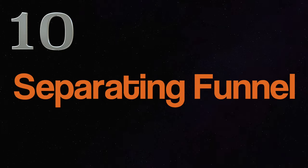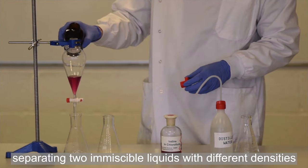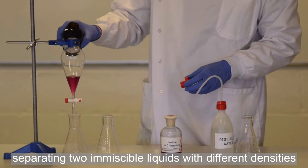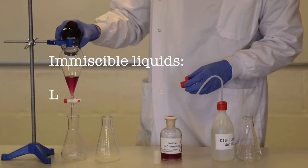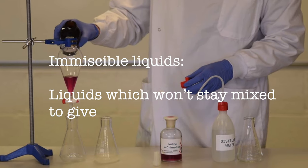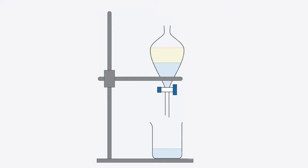Number 10. Separating funnel. Separating funnel is used to separate two immiscible liquids with different densities. Immiscible liquids are those which won't stay mixed to give a single phase. Oil and water can be easily separated using this technique. Oil floats on top of water, separating into two layers. Water layer then can be drained into a container by opening a stopcock.